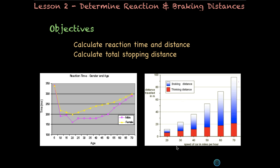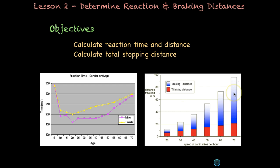Here's another chart that looks at braking distance and thinking distance. Thinking distance is in red and braking distance is in blue. On the x-axis we have the speed in miles per hour and on the y-axis we have the distance traveled in meters. Any time you stop it's going to be a combination of how long it takes you to think to stop as well as how long it actually takes your car to stop. The faster you go, the combination of those two really increases, especially the braking distance.